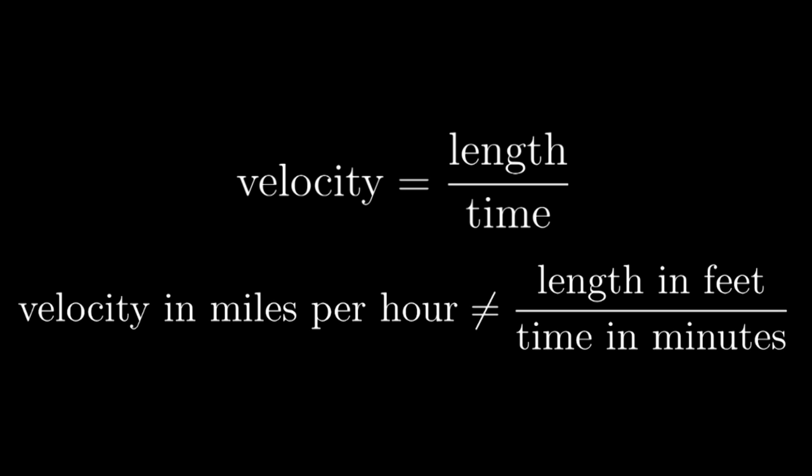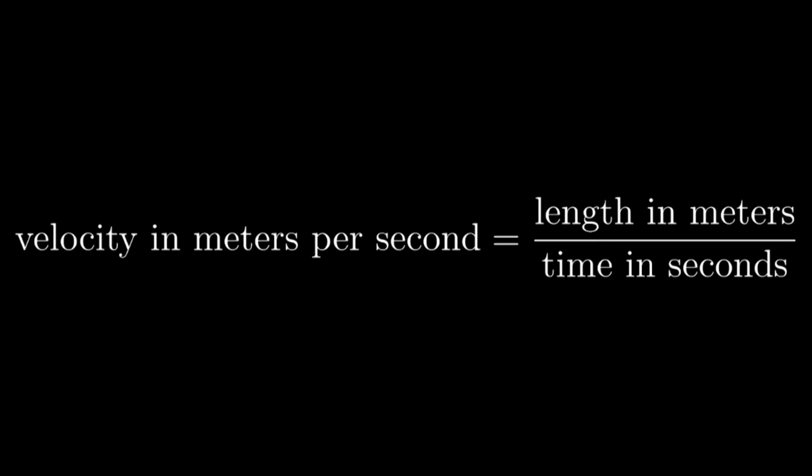To make a system of measurement coherent, you just need to make sure that you have one standard unit for each fundamental quantity, and that all the quantities that can be derived from those are given units derived from those standard units. You can decide that you always measure length in meters and time in seconds, and then in a coherent system you would also always measure velocity in meters per second. That way you can avoid all the extra math.